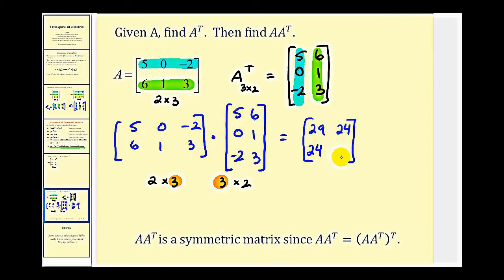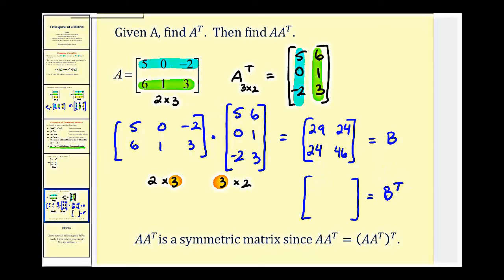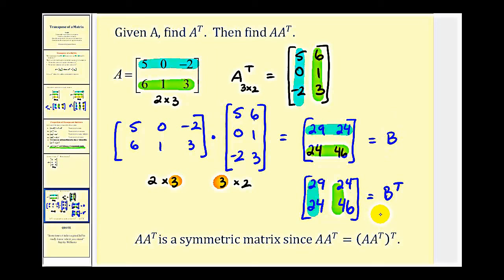For row two, column two: thirty-six plus one is thirty-seven, plus nine, that's forty-six. Let's call this product matrix B. To illustrate the property, let's find the transpose of matrix B. Row one forms column one and row two forms column two, giving us twenty-nine, twenty-four and twenty-four, forty-six. Notice how matrix B and the transpose of matrix B are equal to each other.